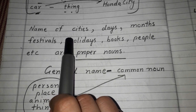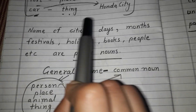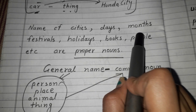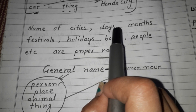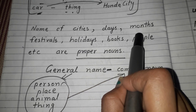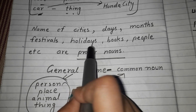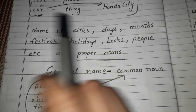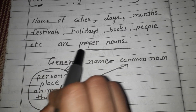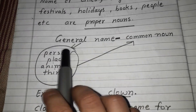Names of cities, days, and months are always proper nouns. Days include Sunday, Monday, Tuesday, Wednesday, Thursday, Friday, Saturday. Months include January through December. Names of festivals like Holi and Diwali, holidays, book titles, and people's names are also proper nouns.